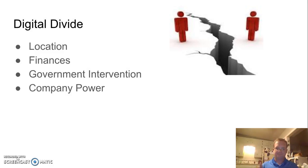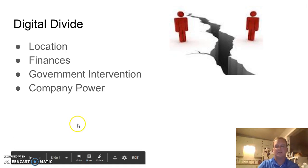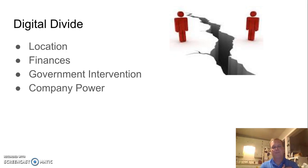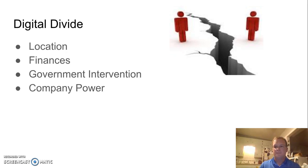The digital divide: not every student — even though we live in 2018 — or every parent or family is going to have access to anything digital or technology-based. Location could be a factor. Here in southwest Kansas it may not be a major factor, but up until the last 10-12 years, grain bins and silos were having issues getting Wi-Fi and had to create small hotspots because you couldn't get service.